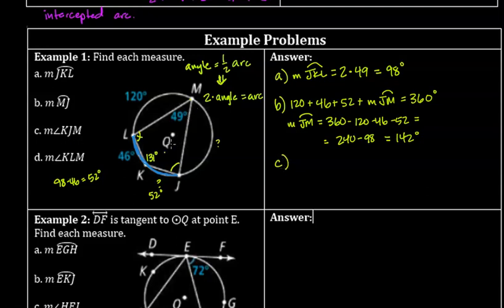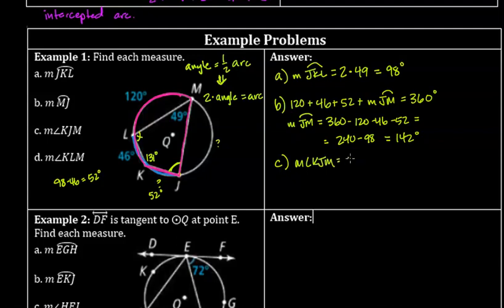Now the question asks for angle KJM. That's an inscribed angle, so we look at the arc it intercepts. One side of the angle goes out here and the other goes here, so it intercepts the arc measuring 46 + 120 = 166 degrees. The measure of angle KJM is half of 166, which is 83 degrees.